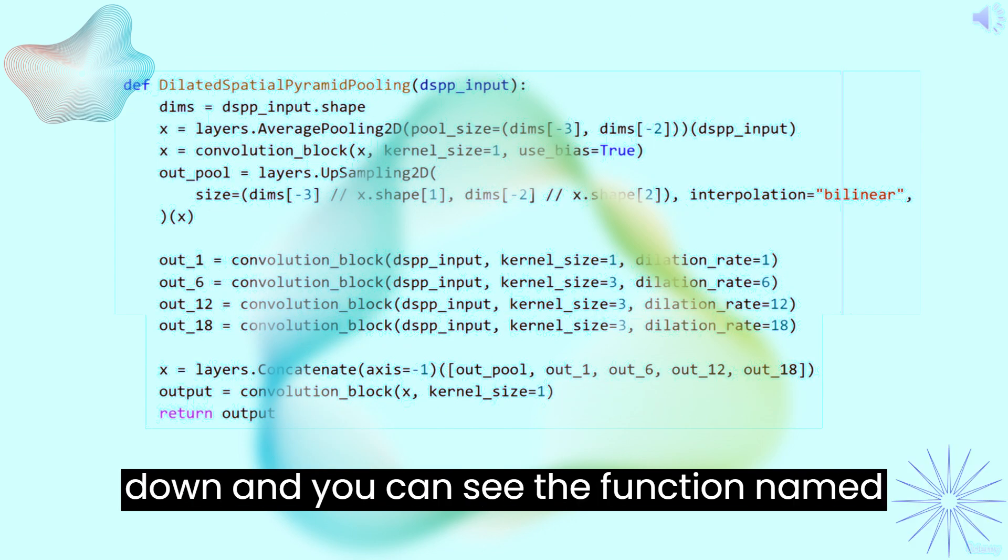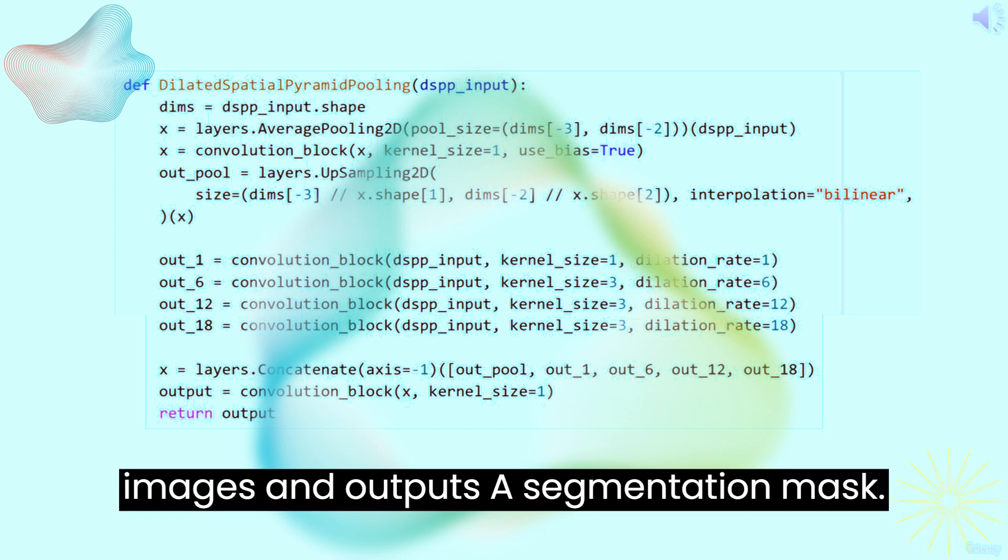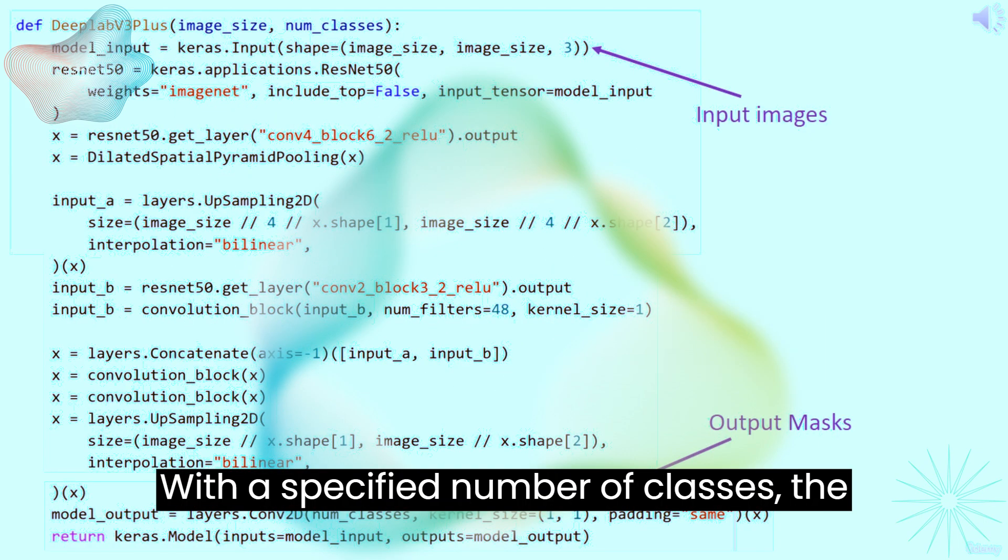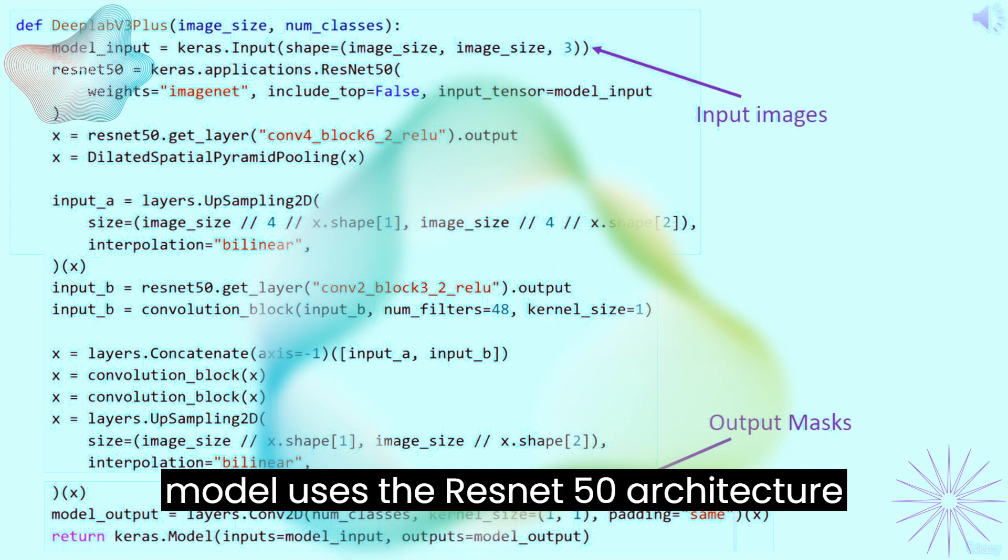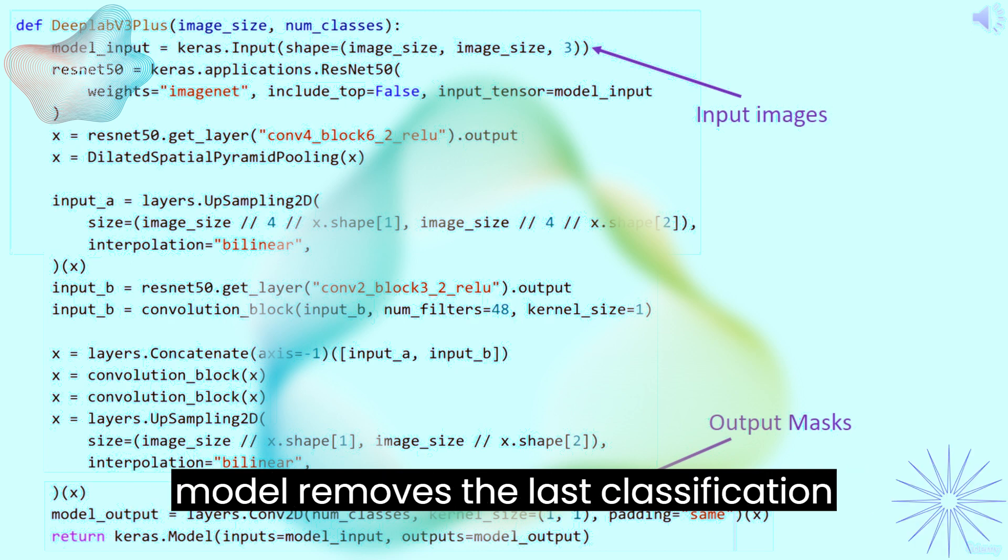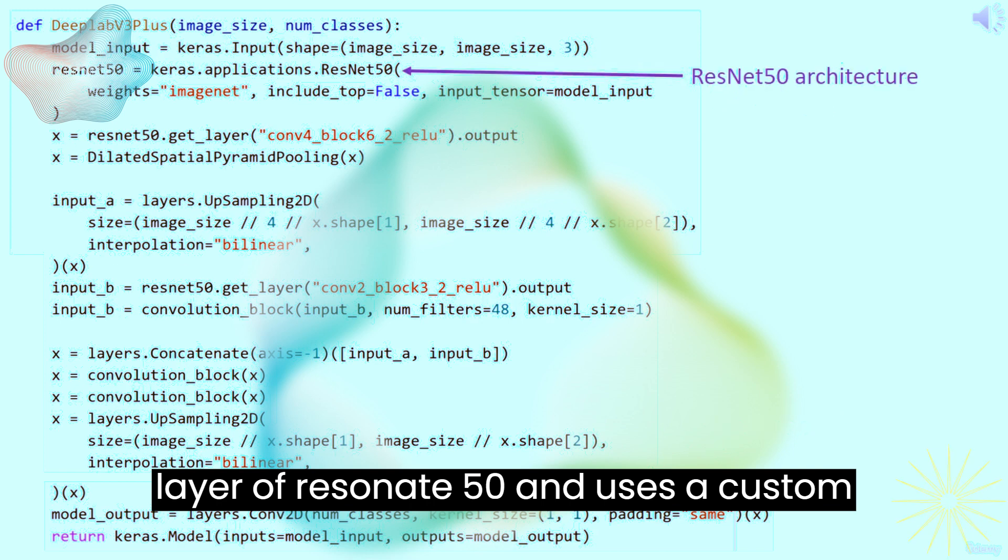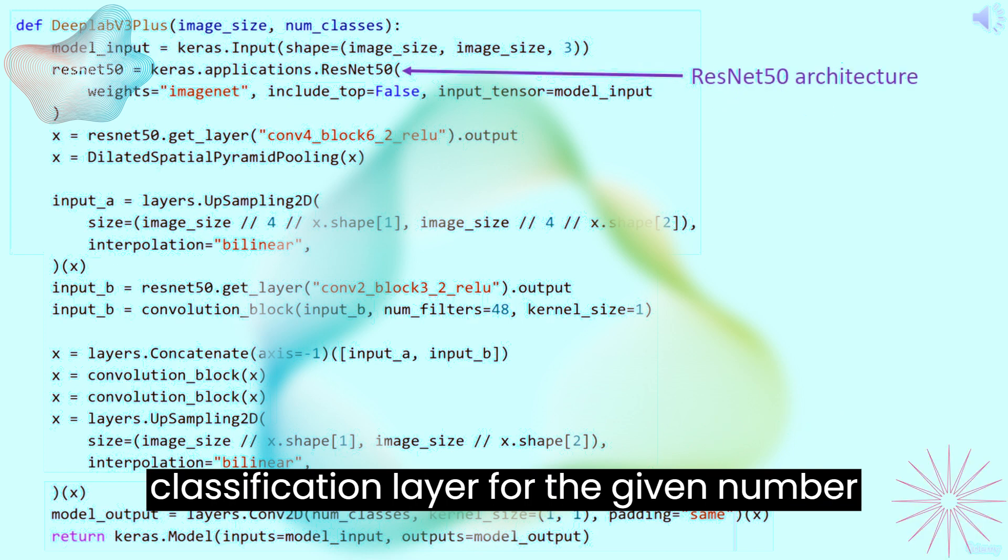Scroll down and you can see the function named DeepLabV3Plus. It inputs images and outputs a segmentation mask. With a specified number of classes, the model uses the ResNet50 architecture with weights pre-trained on ImageNet. The model removes the last classification layer of ResNet50 and uses a custom classification layer for the given number of classes.